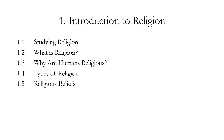This chapter is divided into five main parts: studying religion, or religious studies in general; the definition of religion, or what is religion; why humans are religious in the first place; some of the main types of religions; and a brief classification of some of the main types of religious beliefs.